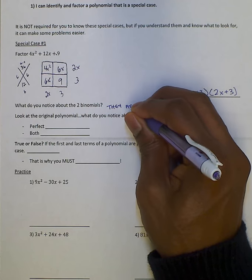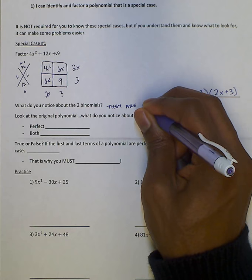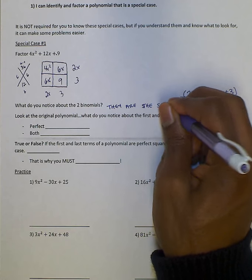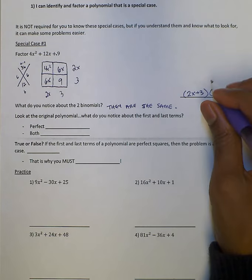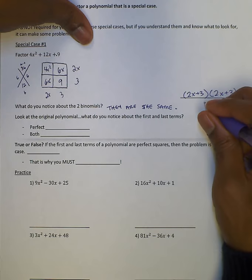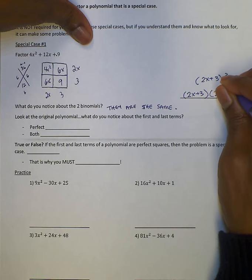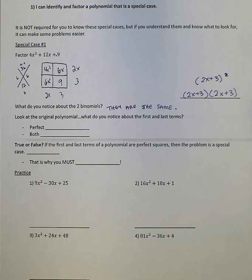And since they are the same, we could rewrite it as, instead of saying 2x plus 3 times 2x plus 3, we could rewrite it as 2x plus 3 squared. You might remember that from our special cases multiplying.